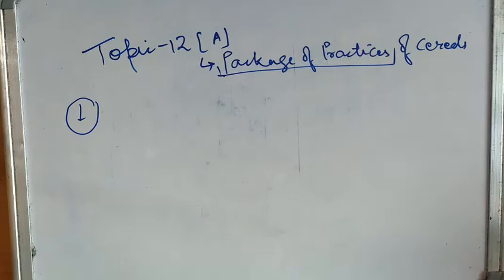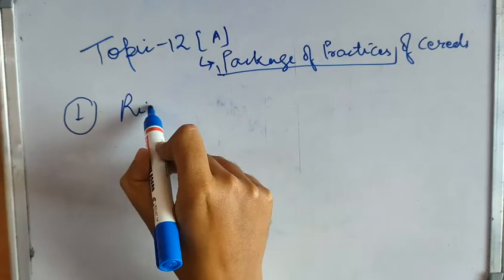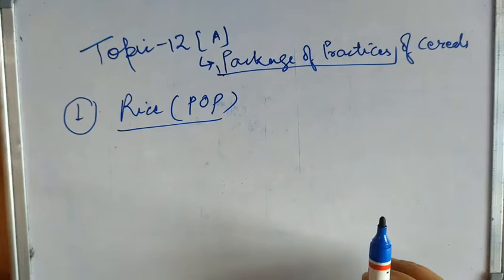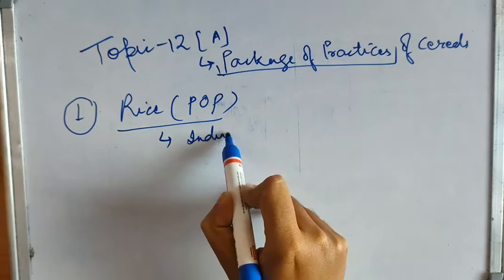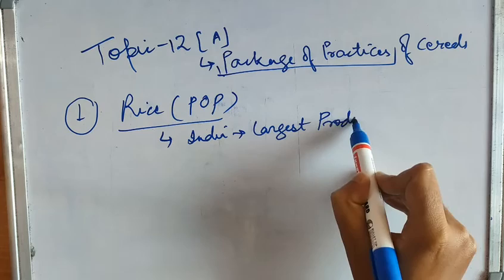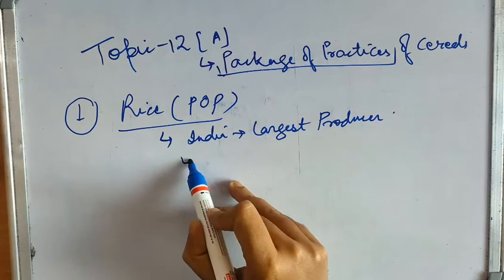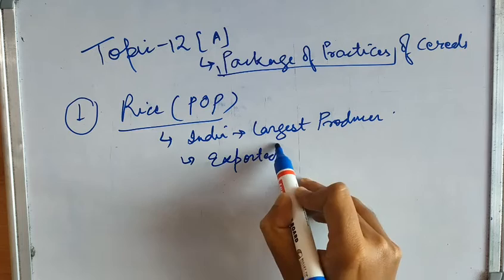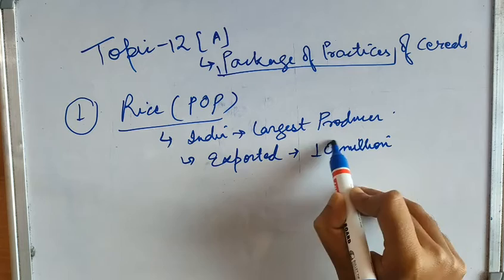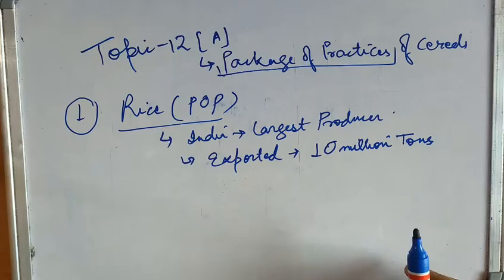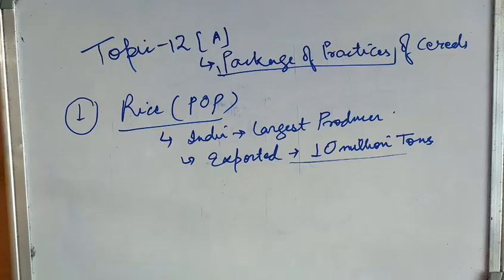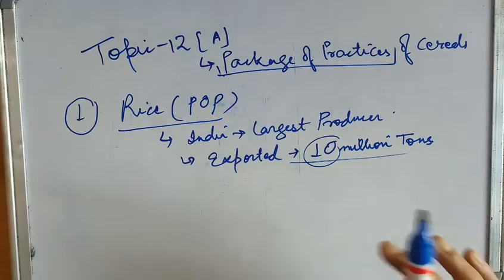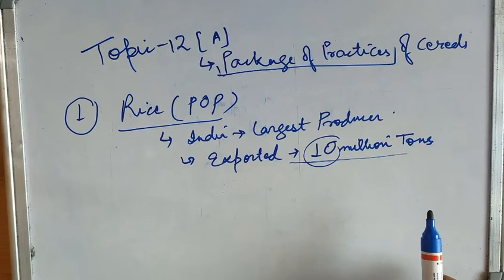The first and most important cereal is rice. India is one of the largest producers of rice, and we export around 10 million tons every year — though that is an approximate figure for overview purposes. You can check the exact figure in reports or on Google.